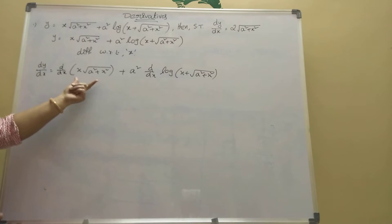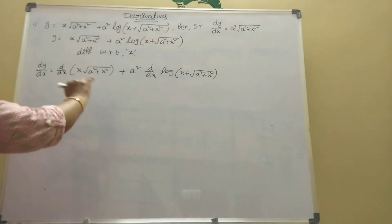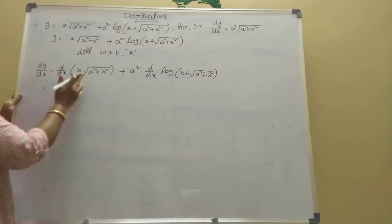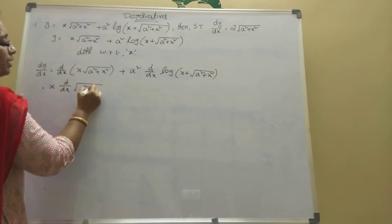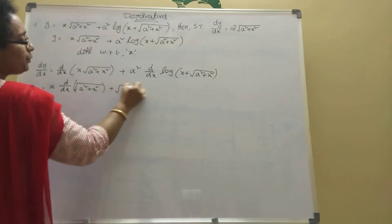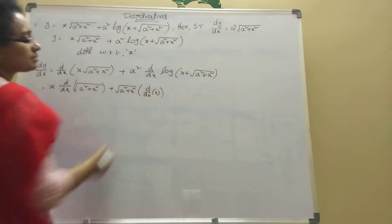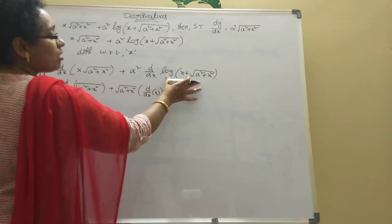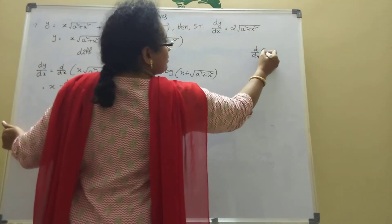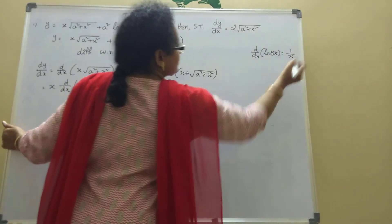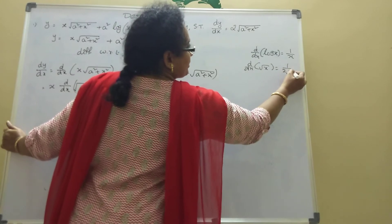x into root of a square plus x square is uv, and a square is the coefficient. So a square into d by dx of log of that. Now d by dx of uv: u into d by dx of v plus v into d by dx of u. So x into d by dx of root of a square plus x square, plus root of a square plus x square into d by dx of x. For the log part, d by dx of log x is 1 by x, and d by dx of root x is 1 by 2 root x. Use those formulas.